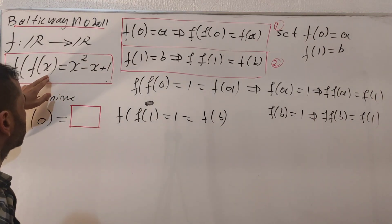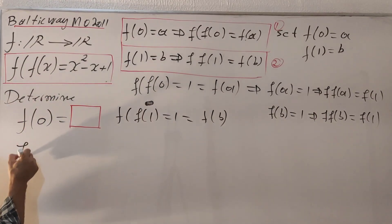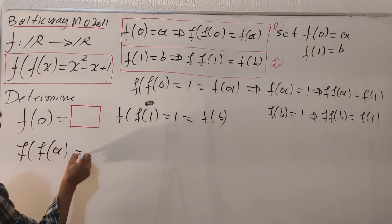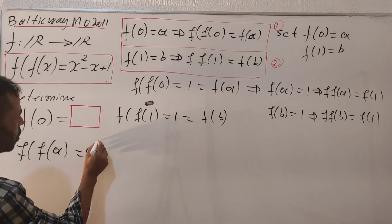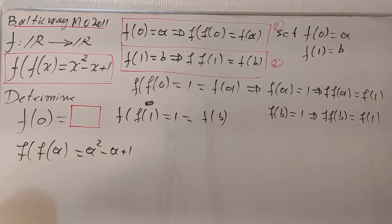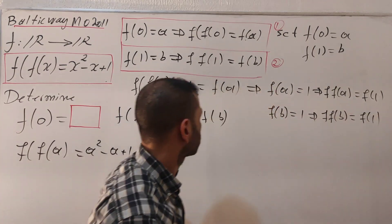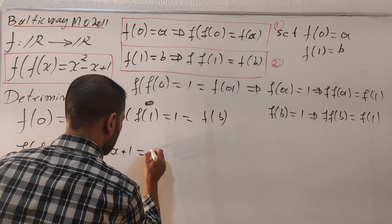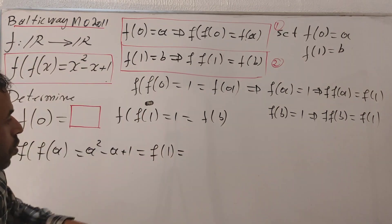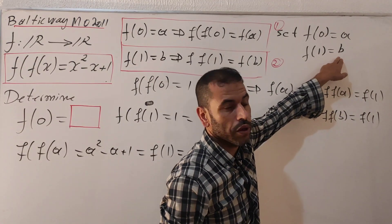Plugging x with a into the original function, f of f of a equals a squared minus a plus one. This equals f of one, which we know equals b. So we have a squared minus a plus one equals b.